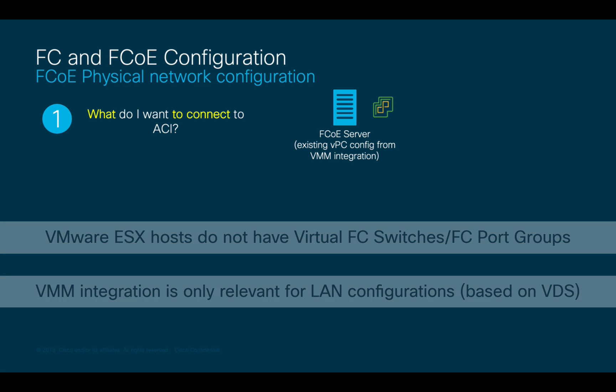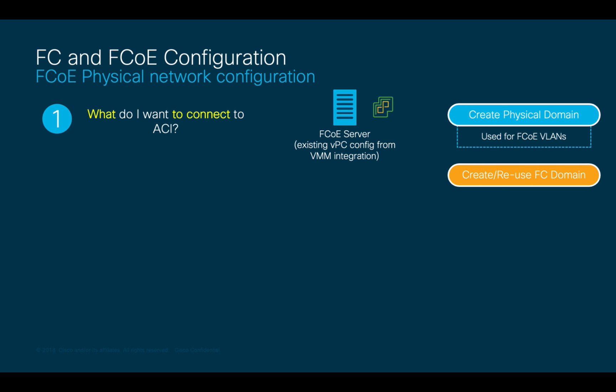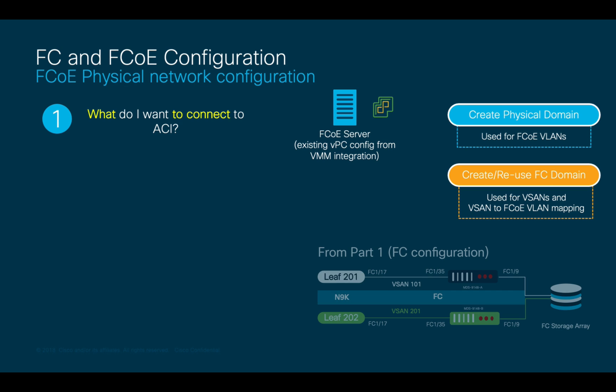What will we use then? First, I will need to create a physical domain to transport FCoE traffic to the host using the required FCoE VLANs. Additionally, I will need a Fiber Channel domain to map the VSANs from my Fiber Channel uplinks to the FCoE VLANs. If you remember, we already created a Fiber Channel domain in part 1 of this chapter, including VSAN 101 and VSAN 201. We can simply reuse that Fiber Channel domain, as I will show you next.